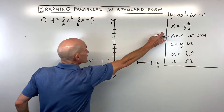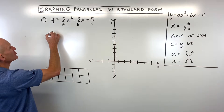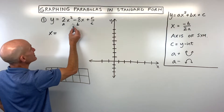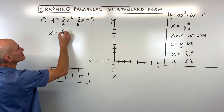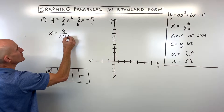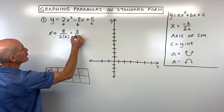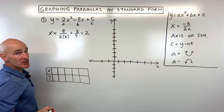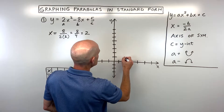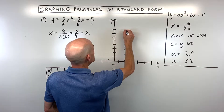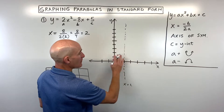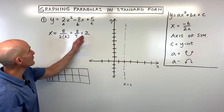Using the formula x equals negative b over 2a: negative b means the opposite of b, so the opposite of negative 8 is positive 8, over 2 times a which is 2. That comes out to 8 over 4, which equals 2. So our axis of symmetry is at x equals 2 — that's the line that divides the parabola in half, and it's also the x-coordinate of the vertex.